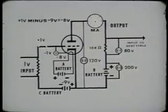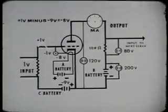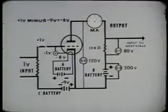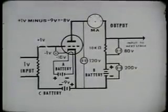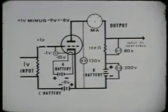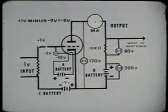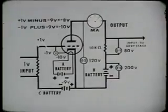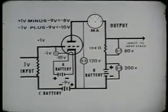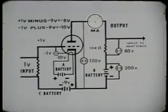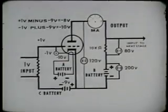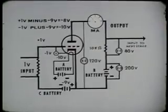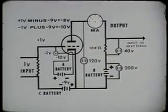When the signal voltage goes to a negative peak of minus 1 volt, the difference in potential between the grid and cathode becomes minus 10 volts, computed by adding minus 1 and minus 9. This increase in potential causes the current through the tube to decrease to 4 milliamperes. The voltage across the load resistor now decreases to 40 volts, and the plate-to-cathode voltage increases to 160 volts.